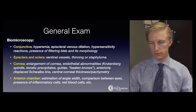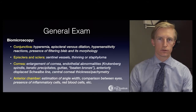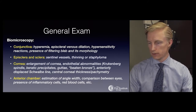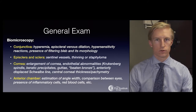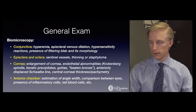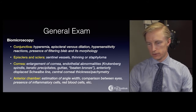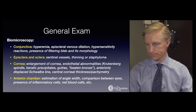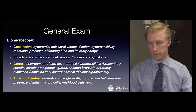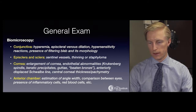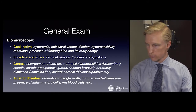Assessment of the episclera and sclera looks for sentinel vessels that might suggest an intraocular tumor, thinning of the sclera, or an area of staphyloma. The corneal exam looks for enlargement of the cornea, endothelial abnormalities such as Krukenberg spindle, keratic precipitates, guttae, beaten bronze appearance of the endothelium, an anteriorly displaced Schwalbe's line, as well as central corneal thickness measured by pachymetry.